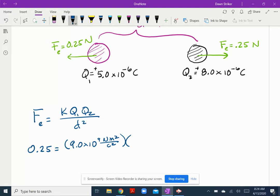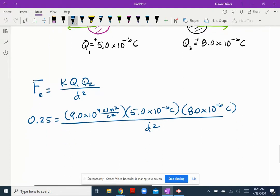One of the charges, 5 times 10 to the negative 6 Coulombs. The other one is 8 times 10 to the negative 6 Coulombs. And last but not least, divide by D squared, which is the thing I don't know.